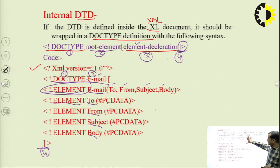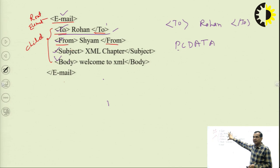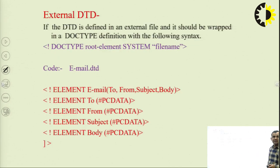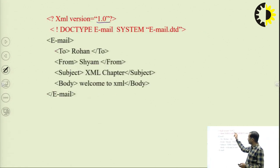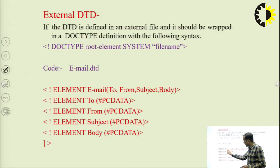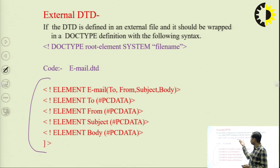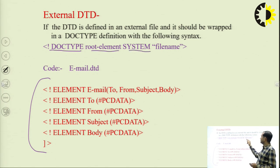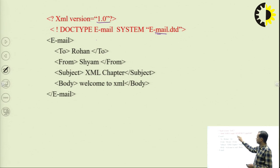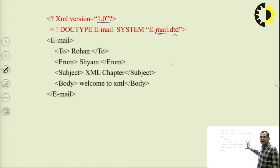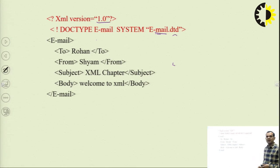When we put the DTD structure inside the XML document, it is the internal DTD. When we put the DTD structure in a separate external file and reference it, that is known as the external DTD.